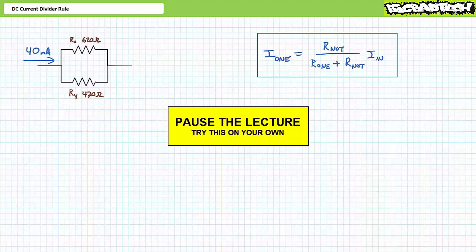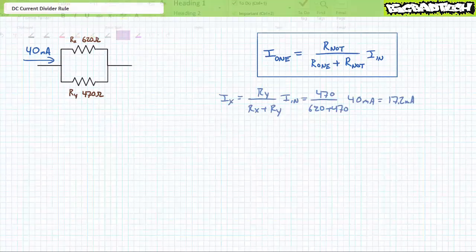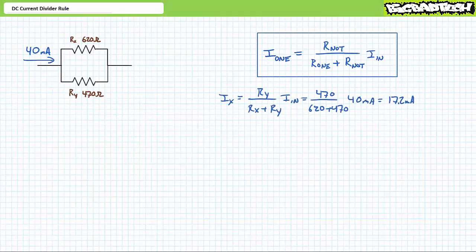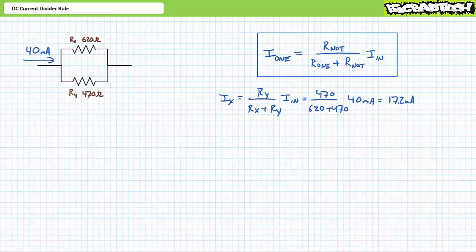If you're tracking, you should have obtained the following results. The DC current divider rule set up to solve for IX is equal to the resistance of the element not of interest, in this case, RY, divided by the summation of these two resistors, RX plus RY, times incoming current, IN, in this case, 40 milliampers. Substituting our given values yields IX to be 17.2 milliampers.